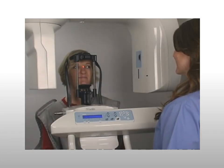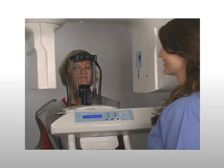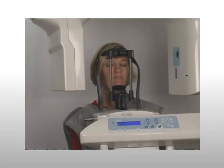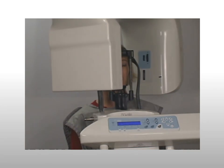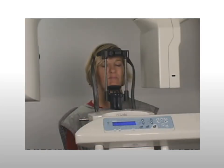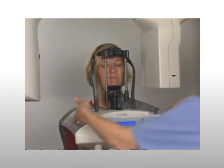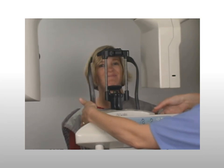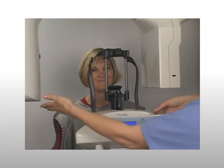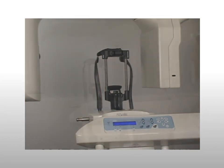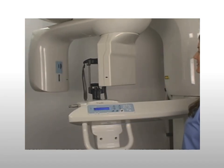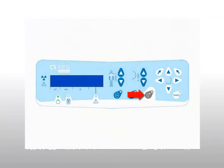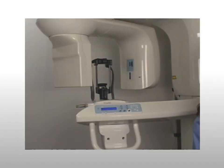Instruct the patient to breathe through the nose and remain still. Exit the room and acquire the image. After the acquisition is complete, return to the room, open the temple supports, and assist the patient in exiting the machine. To ensure the machine is ready for the next patient, press the reset button on the control panel — this returns the unit to the home position.